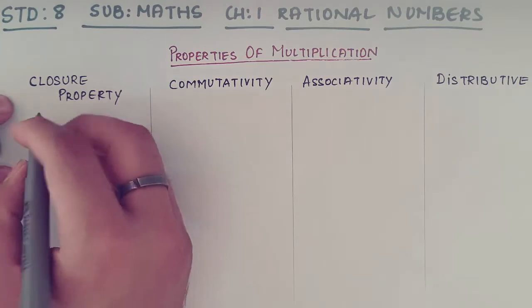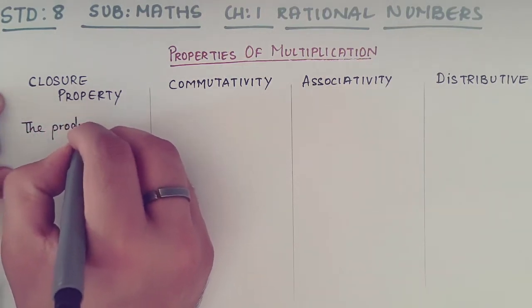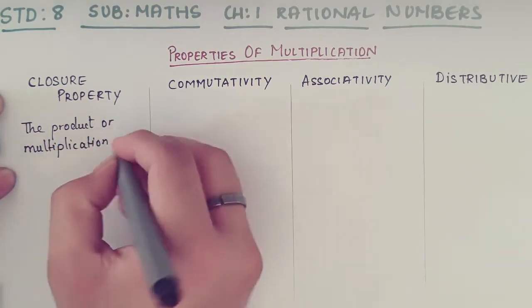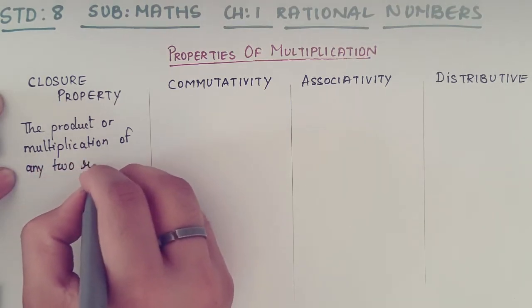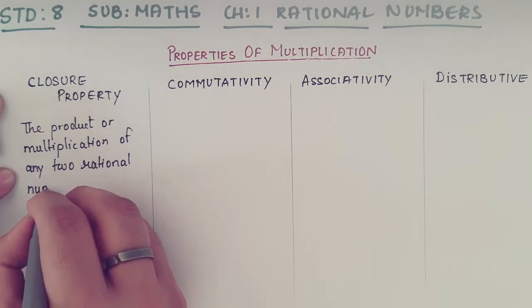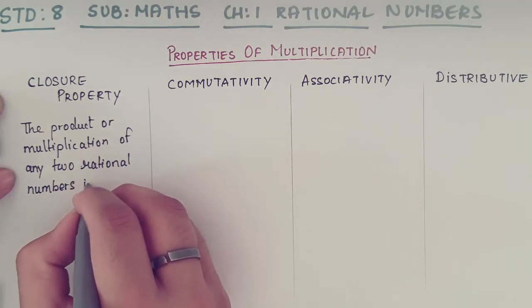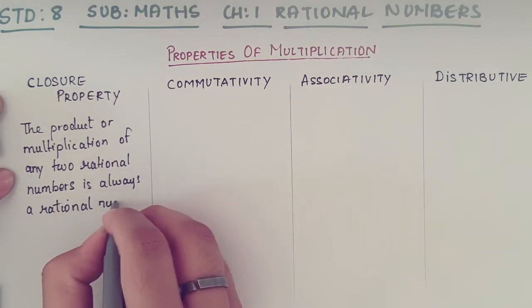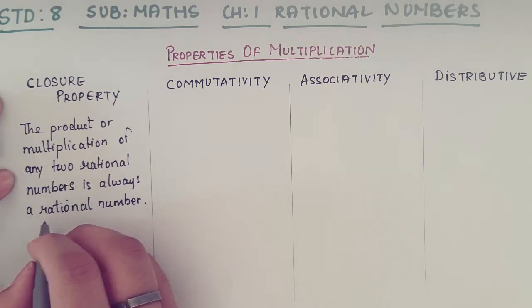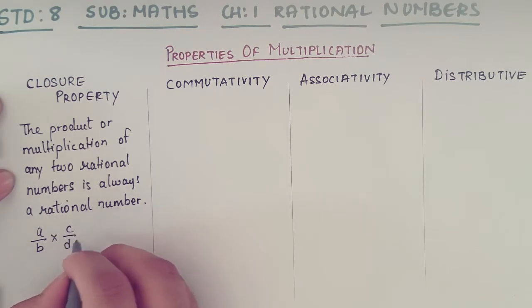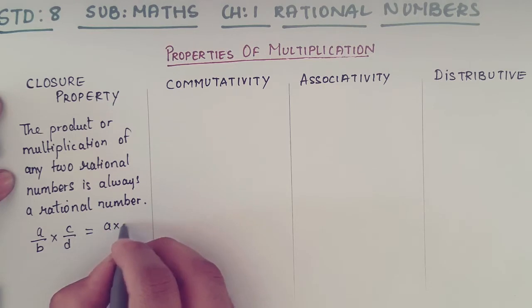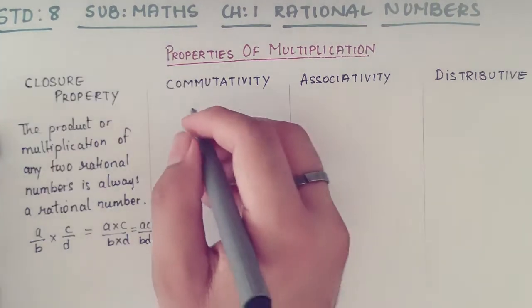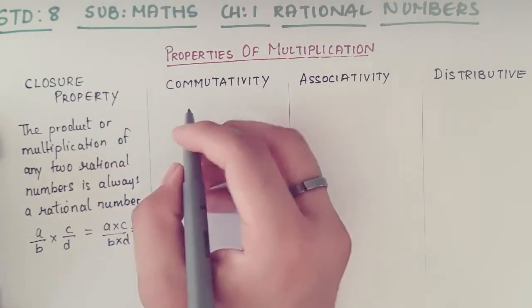Closure property under multiplication states that the product of any two rational numbers is always a rational number. For example, if we write a/b multiplied by c/d, it is going to be (a×c)/(b×d), giving us ac/bd. So this is the closure property.